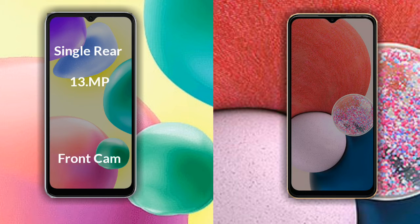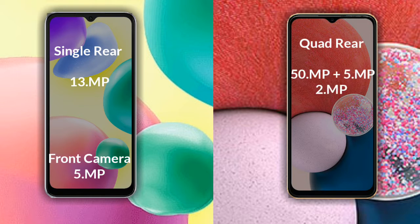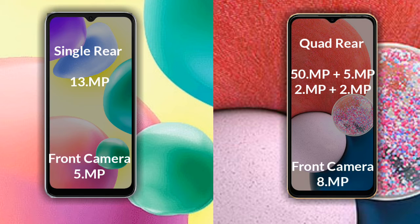Now let's compare the cameras. The Redmi 10A has a single rear camera — the primary camera is 13 megapixels — and its front camera is 5 megapixels. The Samsung Galaxy A13 has a quad rear camera: the primary is 50 megapixels, the secondary sensor is 5 megapixels, the third sensor is 2 megapixels, and the fourth sensor is 2 megapixels. Its front camera is 8 megapixels.